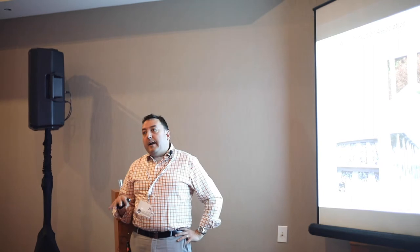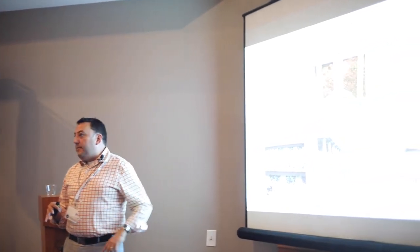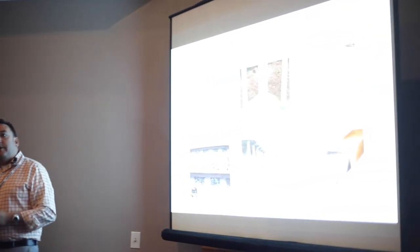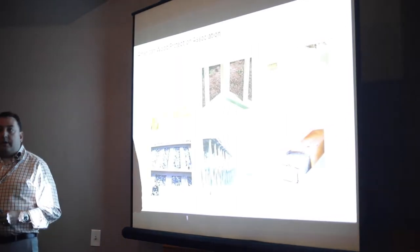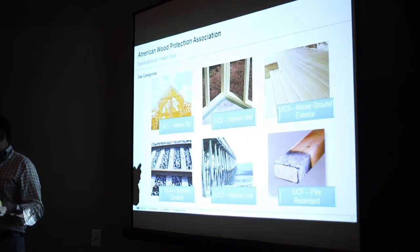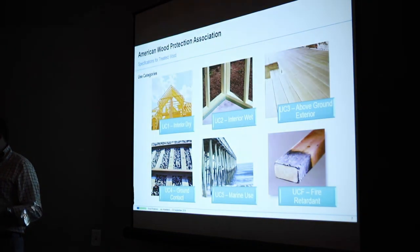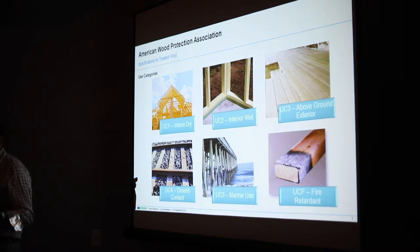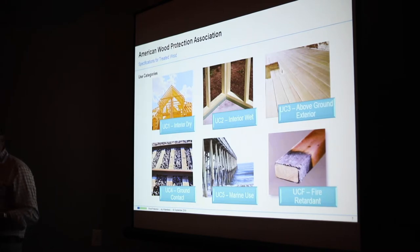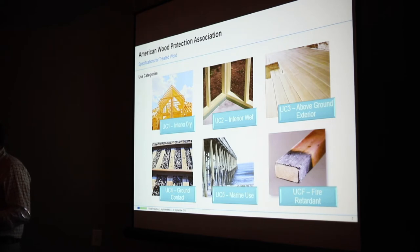The use categories are probably familiar to all of you, but I'll review them. They start at one and go up to five, and there's also a fire retardant use category. UC1 is a low threat for interior dry applications. UC2 is interior wet or damp — like a sill plate at the bottom of a house where you might see occasional dampness, but the threat is not high.